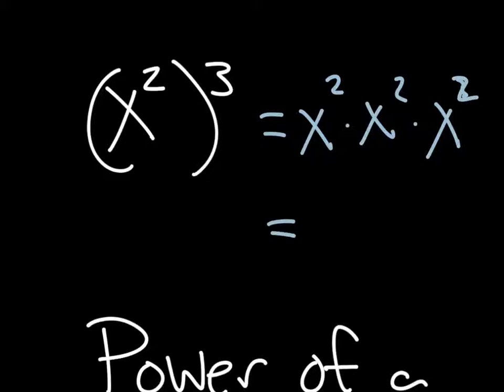And using our properties from the previous section, we can add these three exponents together here and we get x to the sixth.